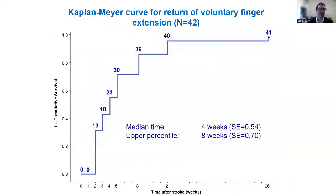Among the 42 people who had return of voluntary finger extension, 40 of them achieved it by 12 weeks. The median time to reaching maximum recovery was somewhere between 4 and 8 weeks for most of these people.